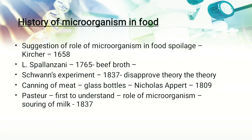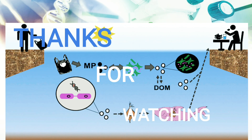After that, Pasteur was the first to fully understand the role of microorganisms. He gave the explanation for the souring of milk in 1837 and also explained how fish are affected by microorganisms. These are the key milestones in the history of food microbiology, showing how our understanding started and was improved by scientists over time.